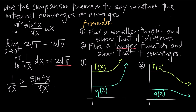So the comparison function 1 over the square root of x is always greater than or equal to the original function sine squared of x over the square root of x — we found a larger function. Because we found a larger function, we needed to show that it converged, and we did show it converged to 2 times the square root of pi over the same interval from 0 to pi. Therefore, by the comparison theorem, the original integral also converges, since it's always less than or equal to our convergent comparison function. That's how you use the comparison theorem to show whether an integral converges or diverges.